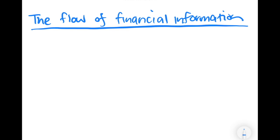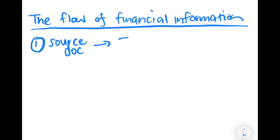As a starting point, all of our transactions have some sort of source document — such as a receipt, an invoice, etc. — something that gives us information about the accounting transaction that the business has entered into. The information on these source documents then gets posted to the journal, either the general journal or one of the specialized journals.